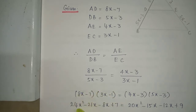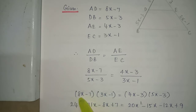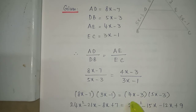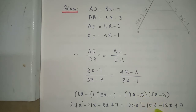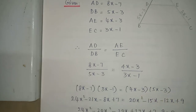Expanding the left side: 8x into 3x is 24x², minus 7 into 3x is minus 21x, 8x into minus 1 is minus 8x, and minus 7 into minus 1 is plus 7. On the right side: 4x into 5x is 20x², minus 3 into 5x is minus 15x, 4x into minus 3 is minus 12x, and minus 3 into minus 3 is plus 9.